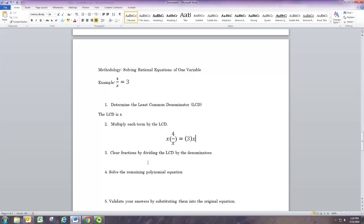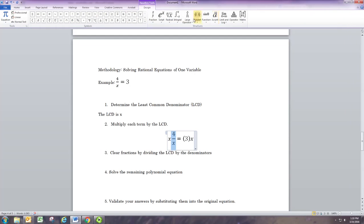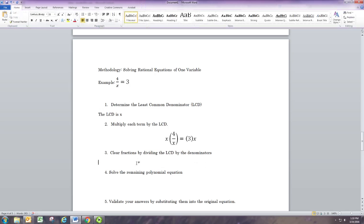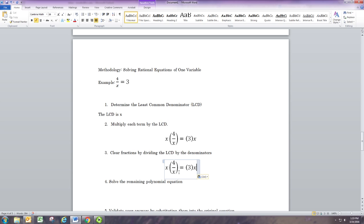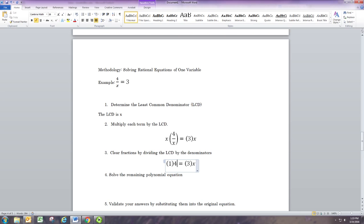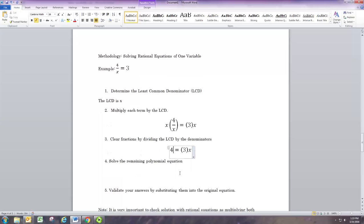All right, now that LCD is going to allow us to clear the fractions. So what you're going to do is take the LCD, the common denominator that you multiplied by, and divide it by the denominators. It should divide evenly by all the denominators because it's a common denominator. Then whatever's left gets multiplied with the numerator. In this one, we do have one fraction, and x divided by x is just 1, and then you have the 4 is still there, so it's just 4.